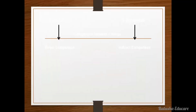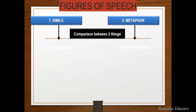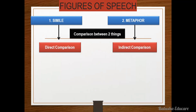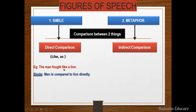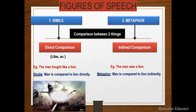Let's begin one by one. Simile and metaphor are both figures of speech based on comparison — comparison between two things. In simile there is direct comparison, and in metaphor there is indirect comparison. In simile, direct comparison is made with words like 'as' and 'like'. For example, 'The man fought like a lion' — simile, because man is compared to lion directly. In metaphor, 'The man was a lion' — because man is compared to lion indirectly.